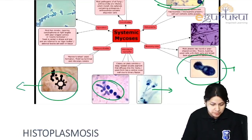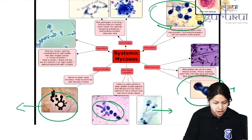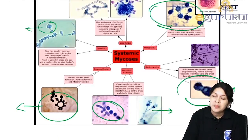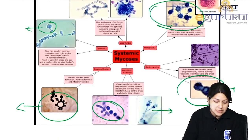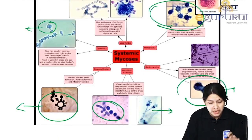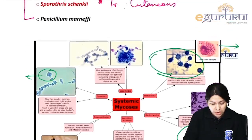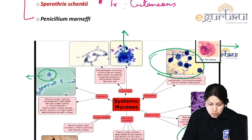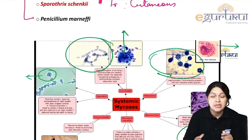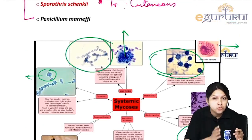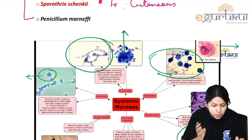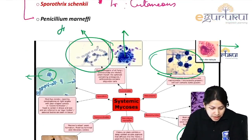This is Paracoccidioides. This typical flower-like structure and cigar-shaped cells are classical for Sporothrix schenckii. Spherules filled with endospores and, in cultures, hyphae typically showing arthrospores are classically seen in Coccidioides immitis.